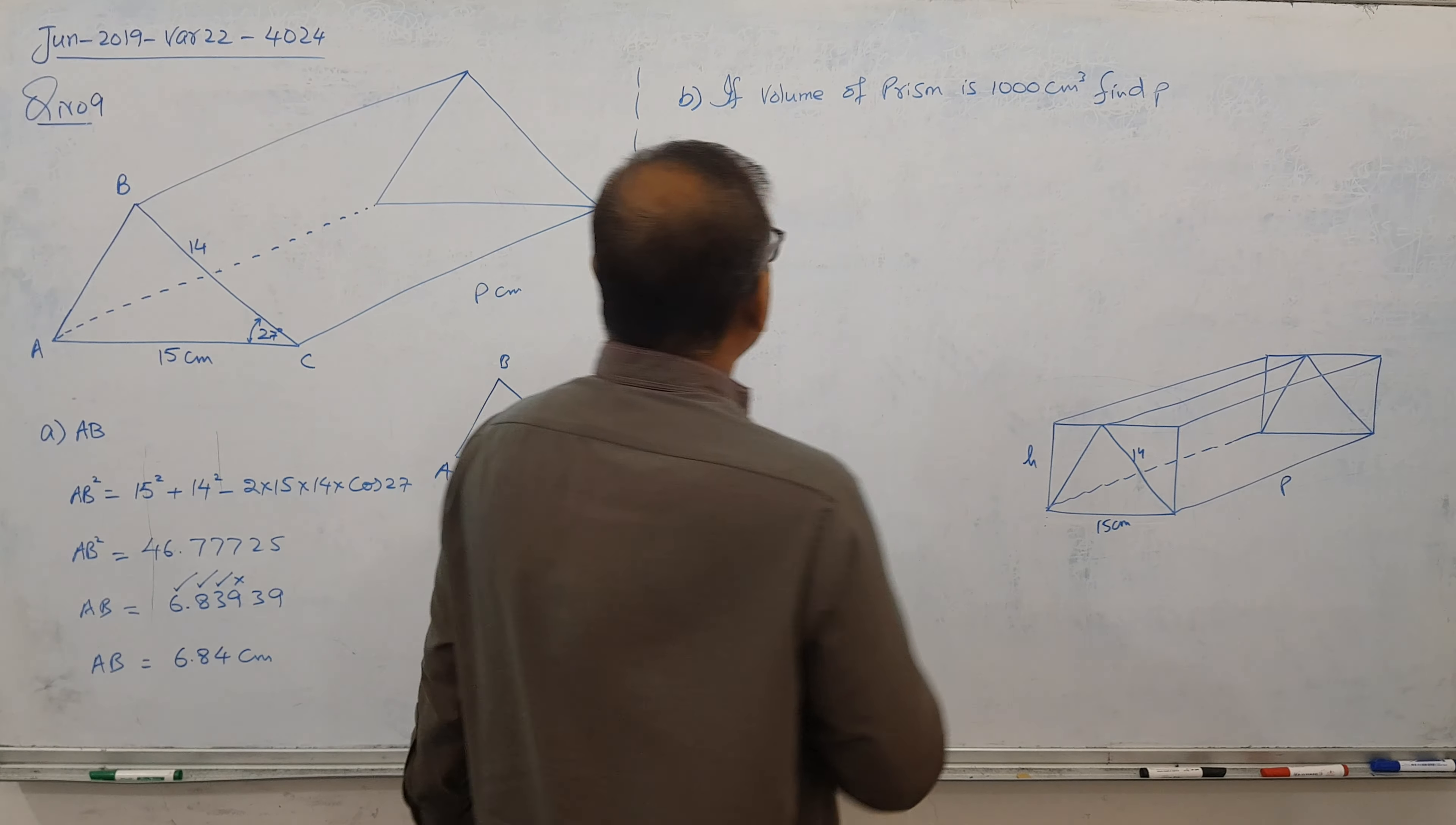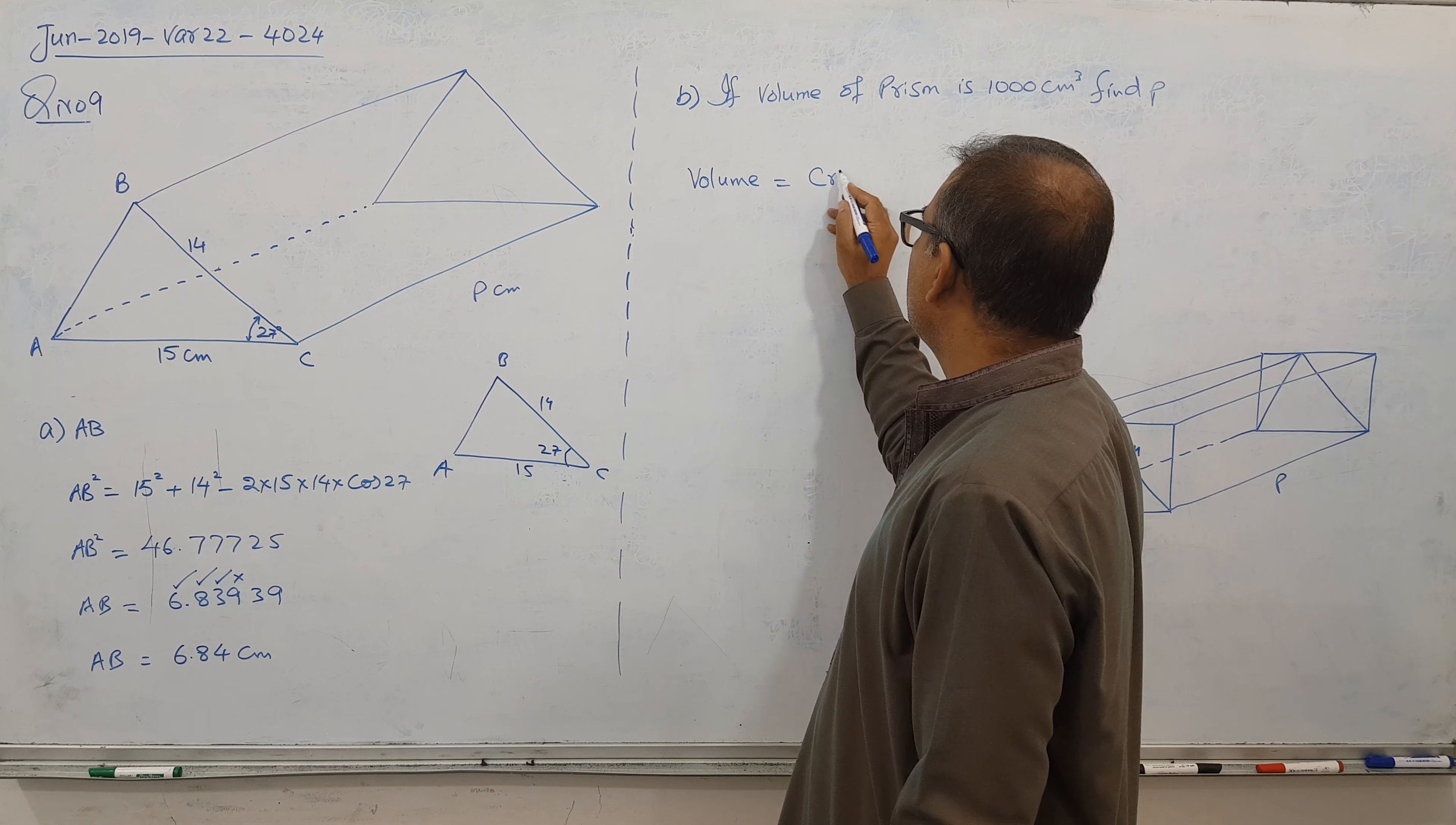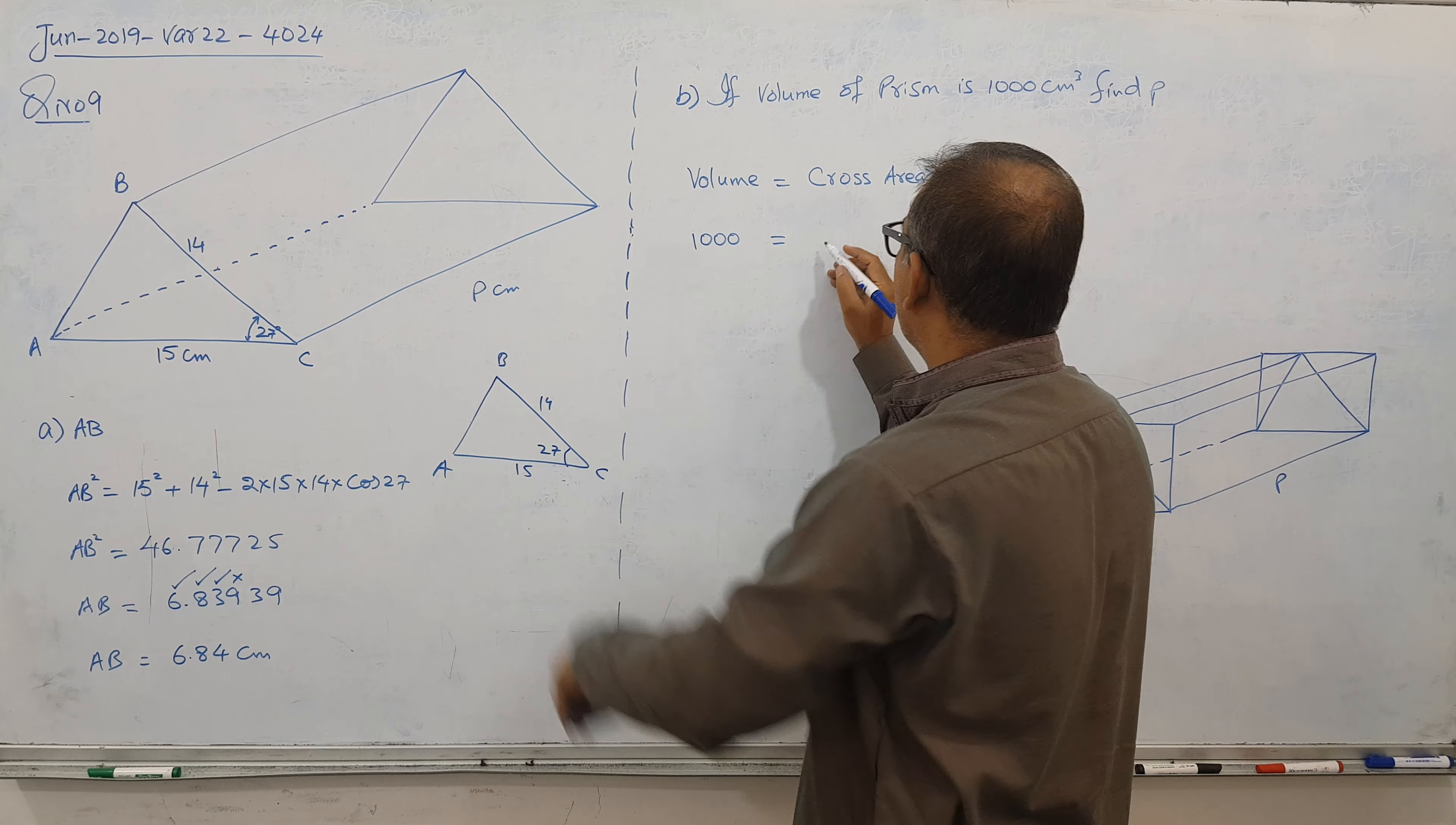He's asking here that if the volume of the prism is 1000 centimeter cubed, find P. And we have a volume formula. Like any prism, volume equals cross-sectional area times length. And volume is 1000. And cross-sectional area we have, we can find it. How come?